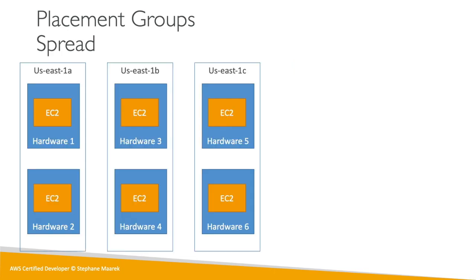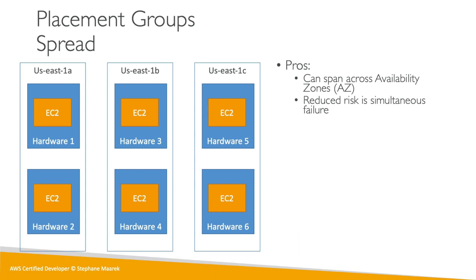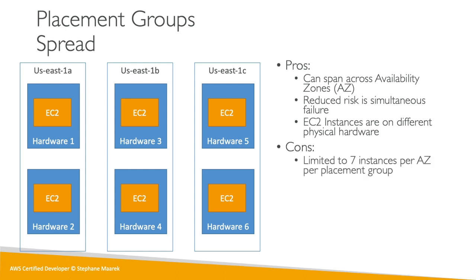Spread is the complete opposite — in spread we want to minimize failure risk. When we ask for a spread placement group, all the EC2 instances are going to be located on different hardware. We have three AZs and six EC2 instances, each on different hardware. This means we can span across multiple AZs with a reduced risk of simultaneous failure. If hardware 1 fails, hardware 2 is unlikely to fail too, so we've separated the risk. The con is that we're limited to seven instances per AZ per placement group.